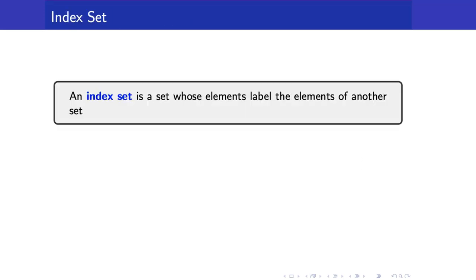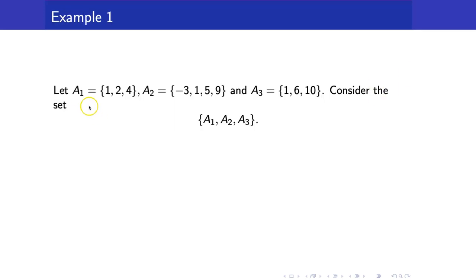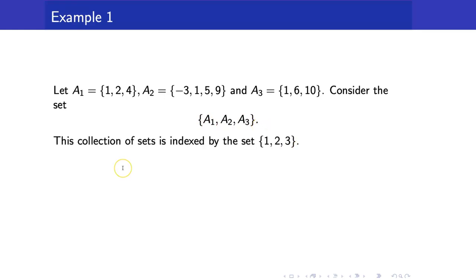First, let us talk about an index set. An index set is a set whose elements label the elements of another set. For example, if we have the sets a sub 1, a sub 2, and a sub 3 defined as follows and we collect them in a set — this is a set containing three sets — our index set would be {1, 2, 3}. We just take the subscripts and collect them inside the set, and that will be your index set.